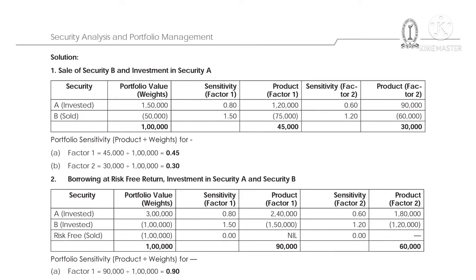For Factor 2: ₹1,50,000 × 0.60 = ₹90,000, minus ₹50,000 × 1.20 = ₹60,000. Net is ₹30,000. The net amount invested is ₹1 lakh. So we divide: ₹45,000 ÷ ₹1,00,000 = 0.45 and ₹30,000 ÷ ₹1,00,000 = 0.30. Therefore, portfolio sensitivities to Factor 1 and Factor 2 are 0.45 and 0.30 respectively.